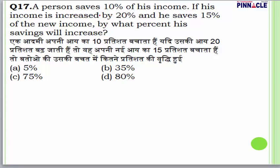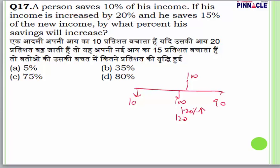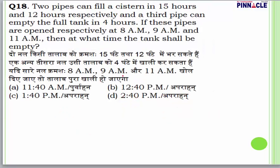Question number 17: A person saves 10% of his income. His income increases by 20% and he saves 15% of the new income. By what percentage do his savings increase? Original income = 100, savings = 10. New income = 120, new savings = 15% of 120 = 18. Increase = 8 rupees on original 10 rupees = 80%. Answer is D.